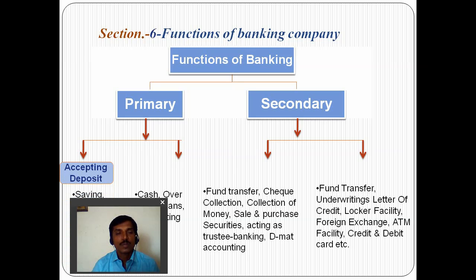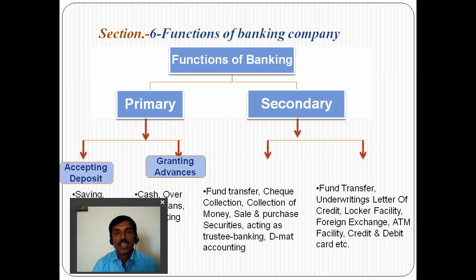The primary functions are: first, accepting deposits — saving account deposits, current account deposits, recurring account deposits, and fixed account deposits. On the other hand, granting of advances — cash is given to the customer, overdraft facilities, and loans are given to the customer. Granting advances is the primary function of a banking company.